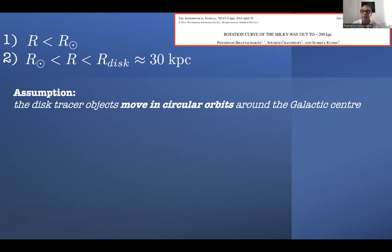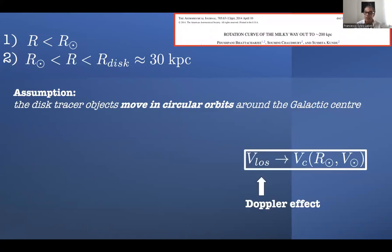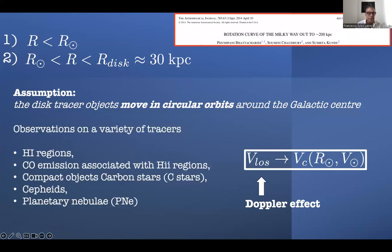For the disk, we assume that objects move in perfectly circular orbits around the galactic center. In this way, from the line-of-sight velocity — which is the quantity we can easily measure — we can derive the rotational velocity. Tracers used include H1 regions, planetary nebulae, and so on.